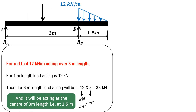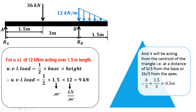Now we will convert this UVL into a point load. It is acting over a length of 1.5 meters. Since it is a triangular distribution, the UVL load will be half base times height: base is 1.5 and height is 12 kilonewton per meter, so the units cancel and it equals 9 kilonewton — that is 12 into 1.5 equals 18, divided by 2 equals 9 kilonewton.